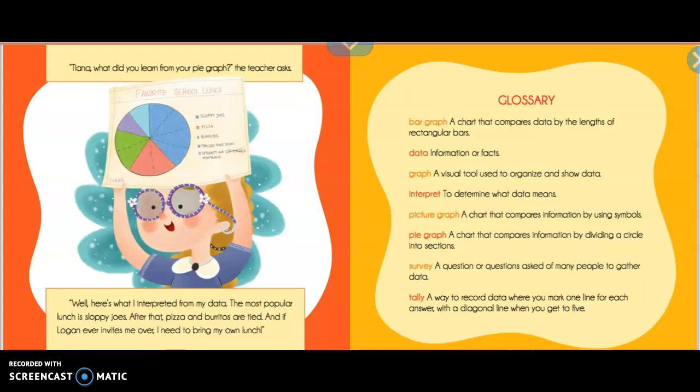Tiana, what did you learn from your pie graph? The teacher asks. Well, here's what I interpreted for my data. The most popular lunch is Sloppy Joe's. After that, pizza and burritos are tied. And, if Logan ever invites me over, I need to bring my own lunch.